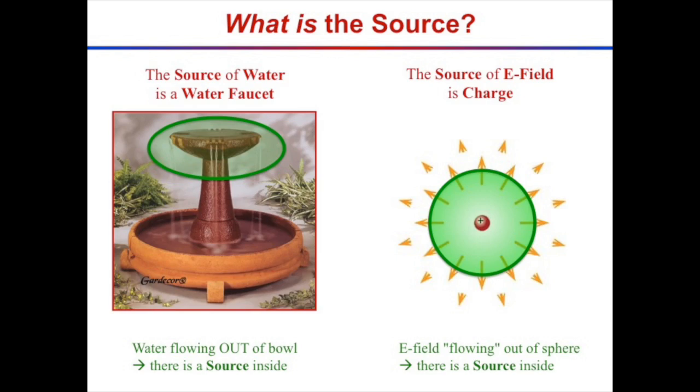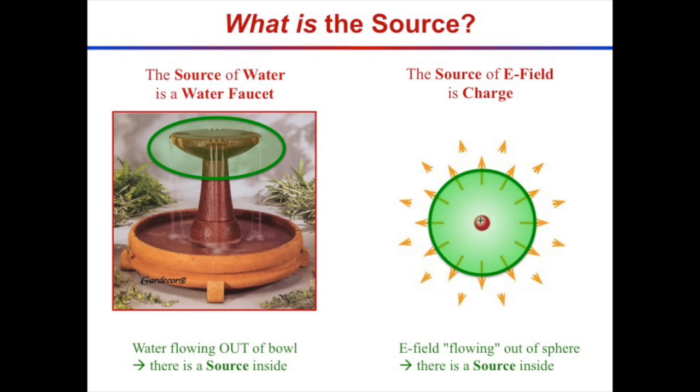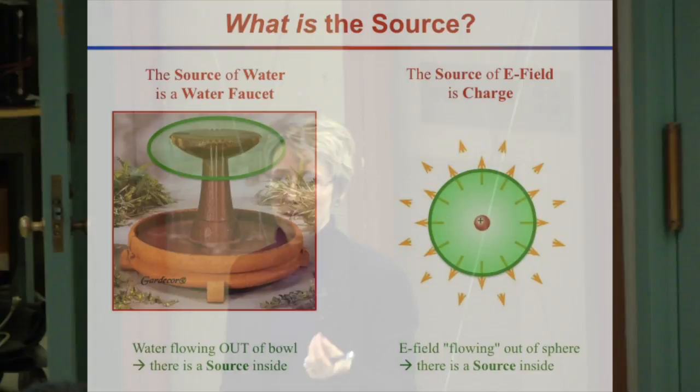So in the two cases: water's flowing out of the bowl, there must be a source inside — the source of water is a water faucet. In the same way, when I draw a sphere around this point charge and think about the electric field as something flowing through the sphere, poking the sphere, and add up all that contribution, I'd see that there must be a source inside — a charged particle inside. So charges are the source of electric fields.